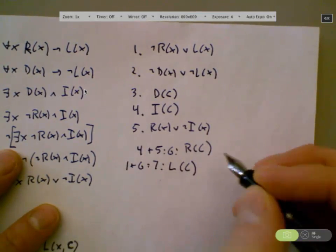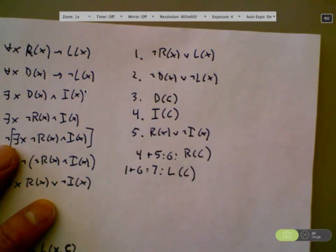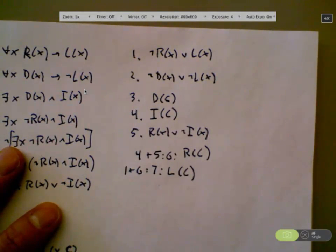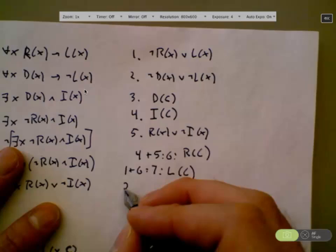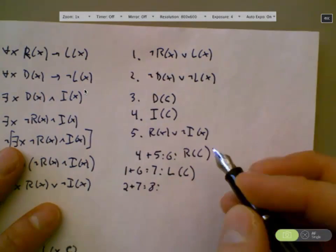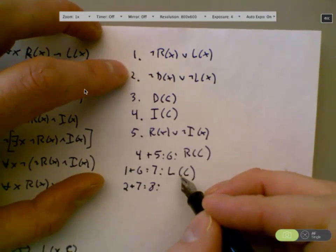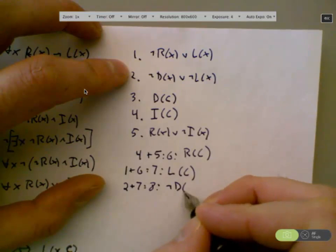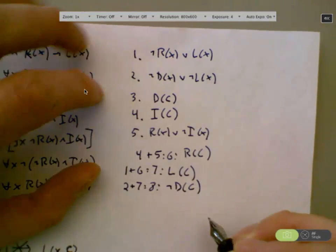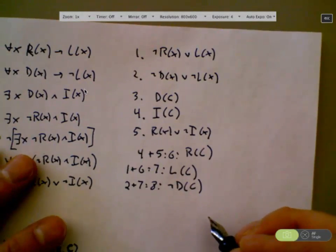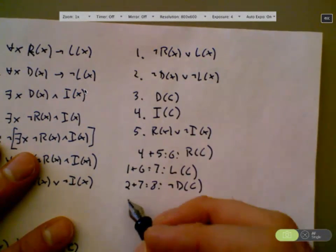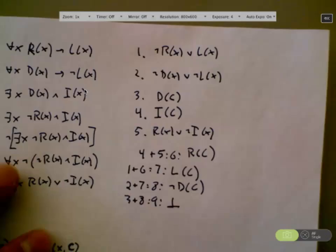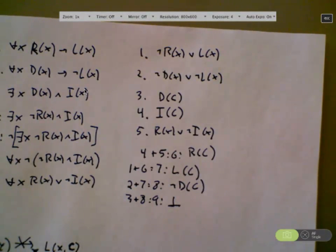No, I can't do five, because the R occurs positively there. In order to do resolution, we have to have a matter meets antimatter collision. One and six is a beautiful choice. I'm going to call that resulting thing seven. What are we going to end up with if we resolve one and six together? We have to unify X and C. So we're going to end up with L of C, exactly.